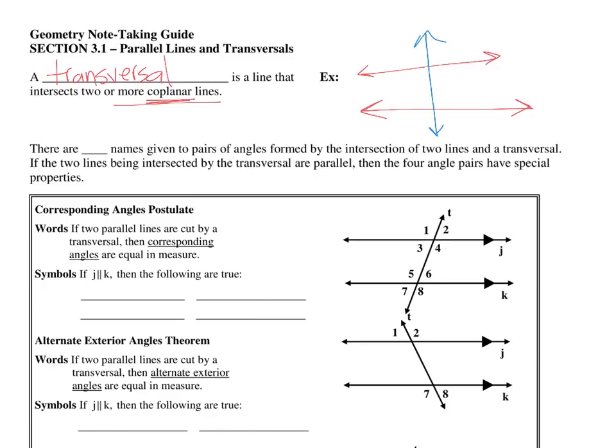There are four names given to pairs of angles formed by the intersection of two lines and a transversal. If the two lines being intersected by the transversal are parallel — this is a key idea — then the four angle pairs have special properties. We're going to be using these properties very often, identifying these special pairs of angles.